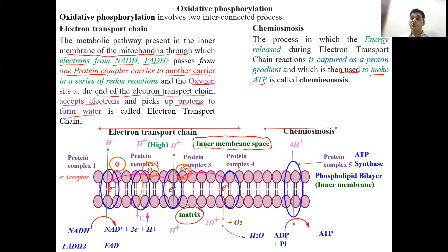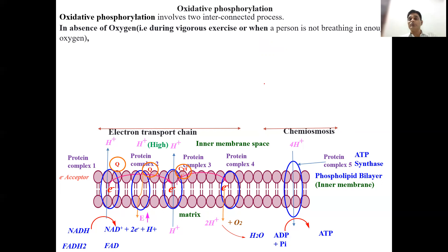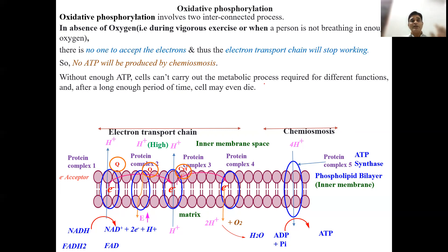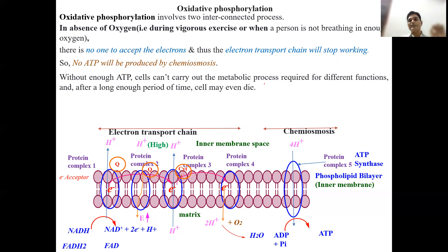An important question: what if there is no oxygen? In the absence of oxygen — for example, during vigorous exercise when a person cannot breathe in enough oxygen — there is no final electron acceptor. The electron transport chain stops working, no ATP is produced by chemiosmosis, the cell cannot carry out different metabolic activities, and after a long period without oxygen, the cell may even die.